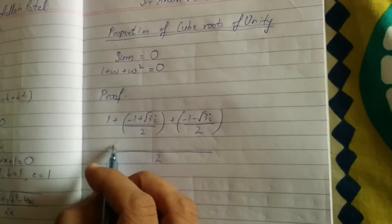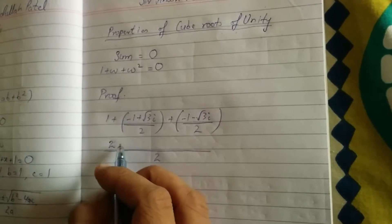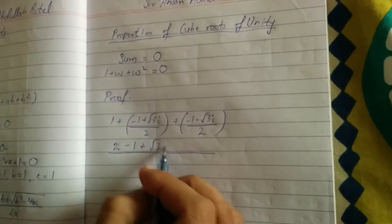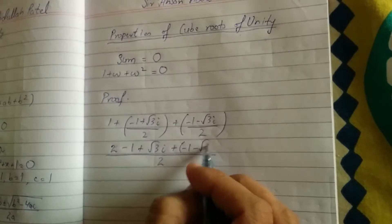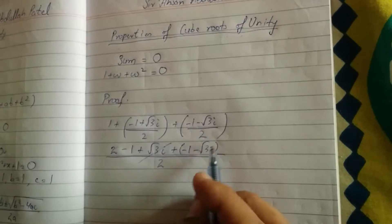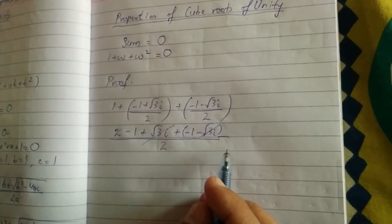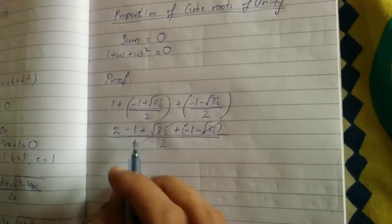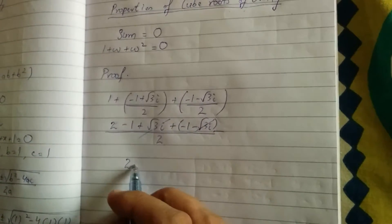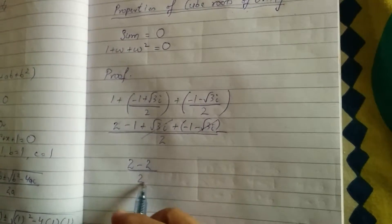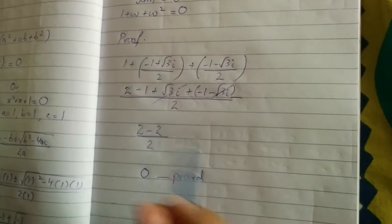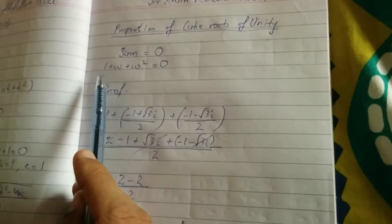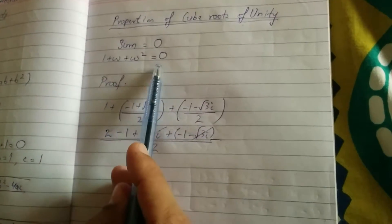We will take the LCM, that is 2. This will become 2 into 1 is 2, minus 1 plus under root 3 iota, minus under root 3 iota. The root 3 iota terms cancel. 2 minus 1 minus 1 becomes minus 2, and 2 minus 2 equals 0. So we have proved that the sum of cube roots of unity is 0, that is 1 plus omega plus omega square is equal to 0.